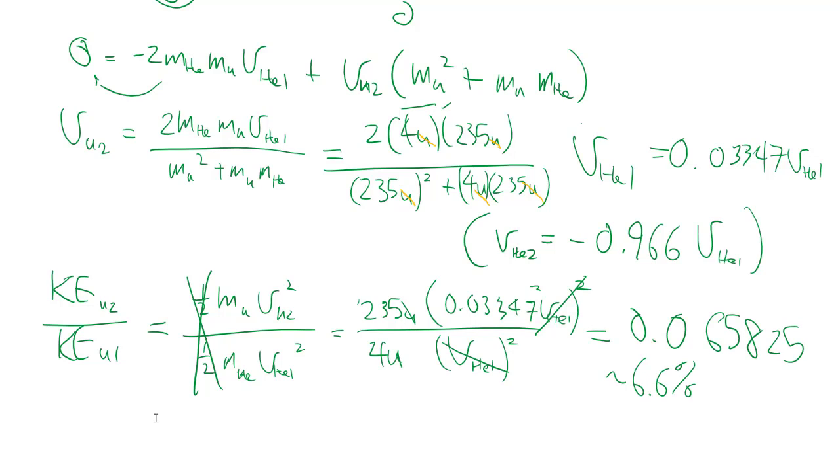The heavy object only picks up a small chunk of the kinetic energy because most of the kinetic energy has to remain in the smaller object as it bounces backwards.